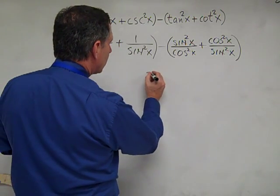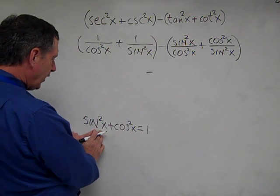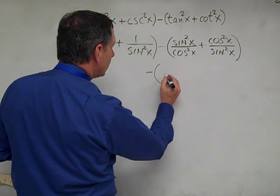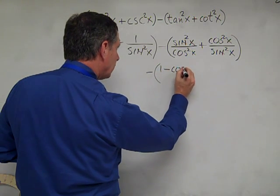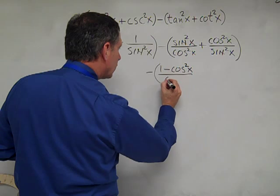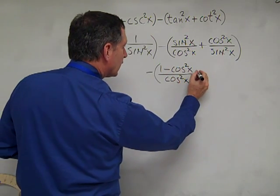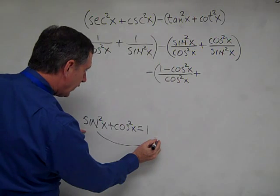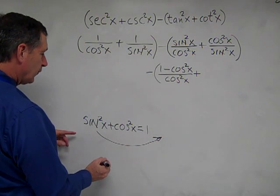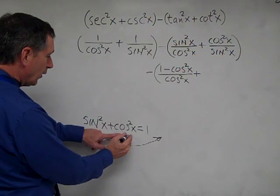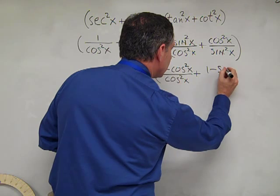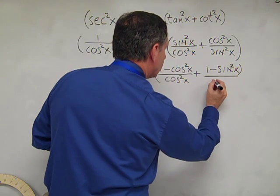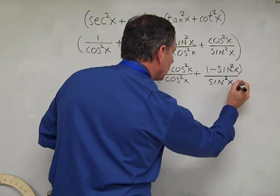Solving the Pythagorean identity for sine squared x gives us 1 minus cosine squared x, so we place 1 minus cosine squared x over cosine squared x. Then solving for cosine squared x gives us 1 minus sine squared x, so we place 1 minus sine squared x over sine squared x.